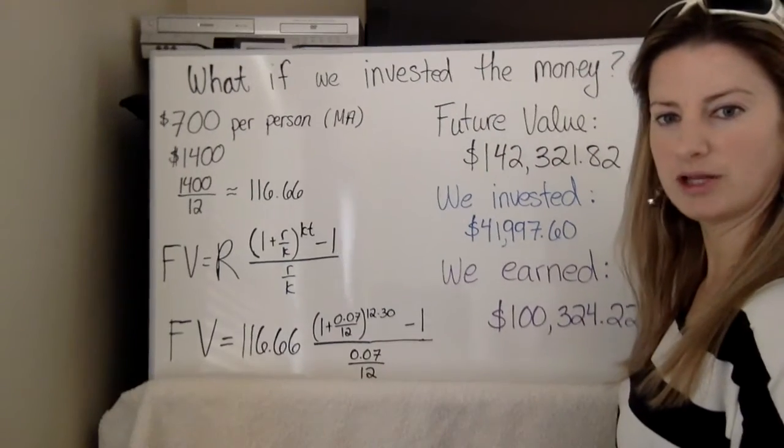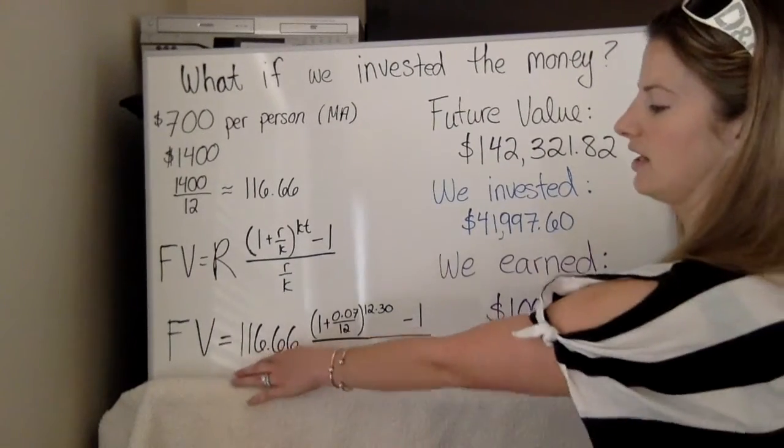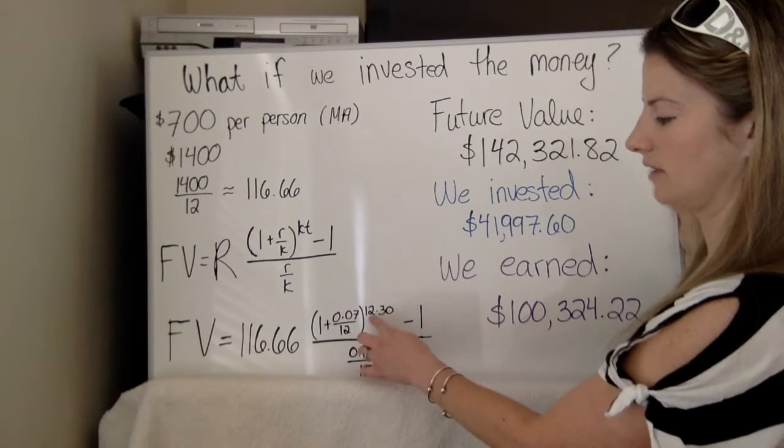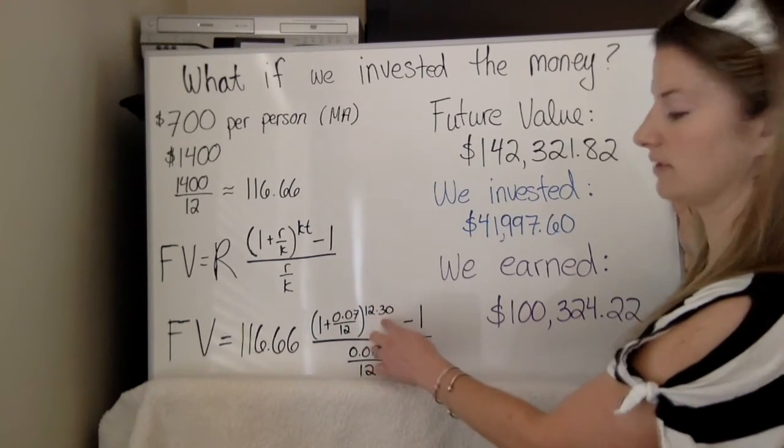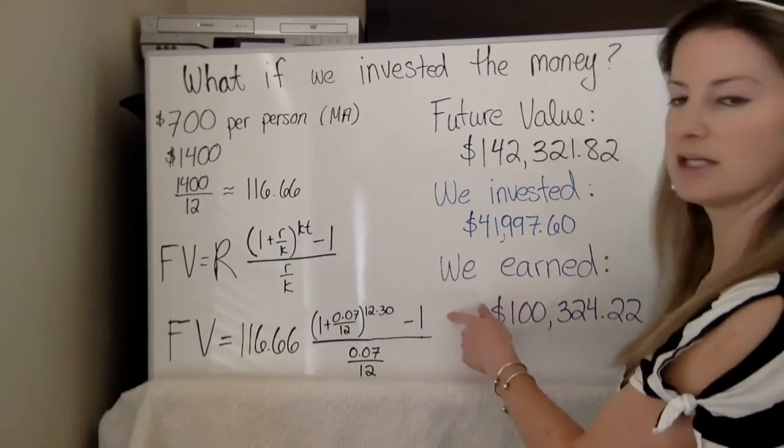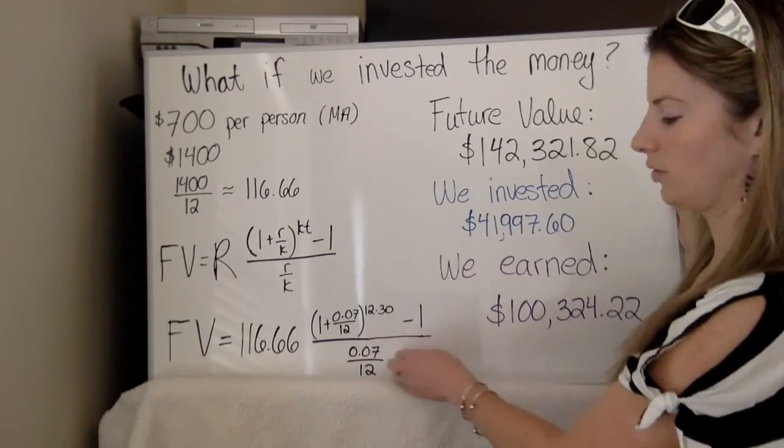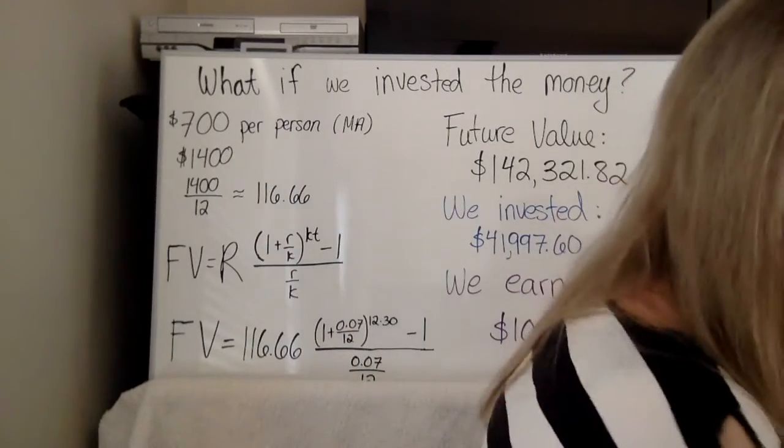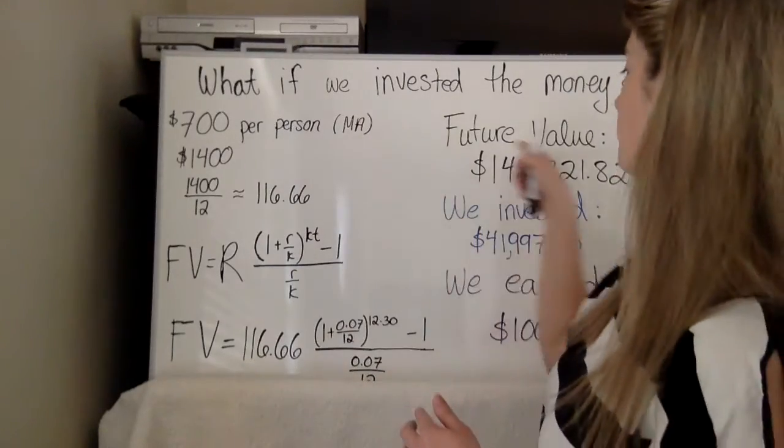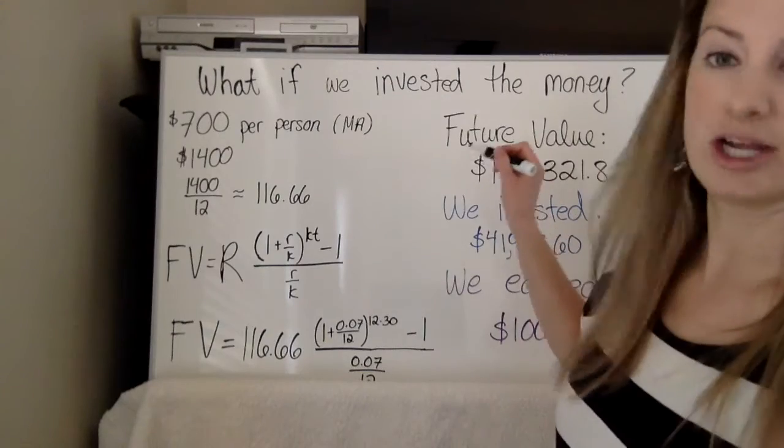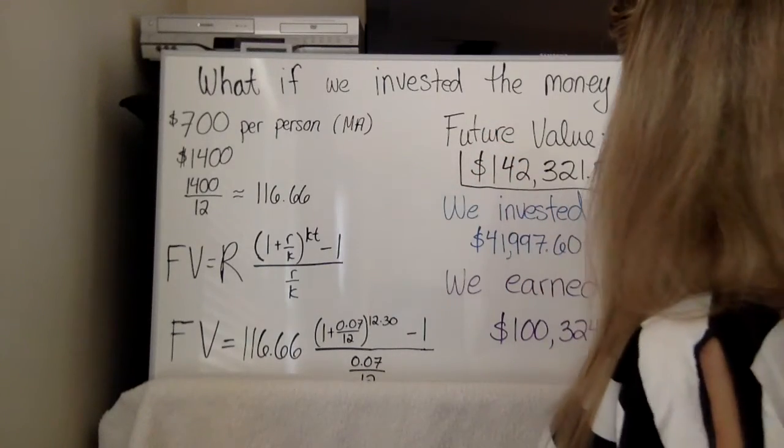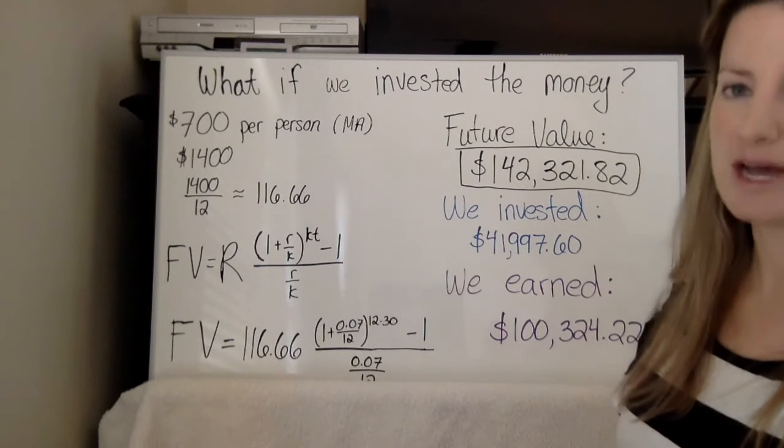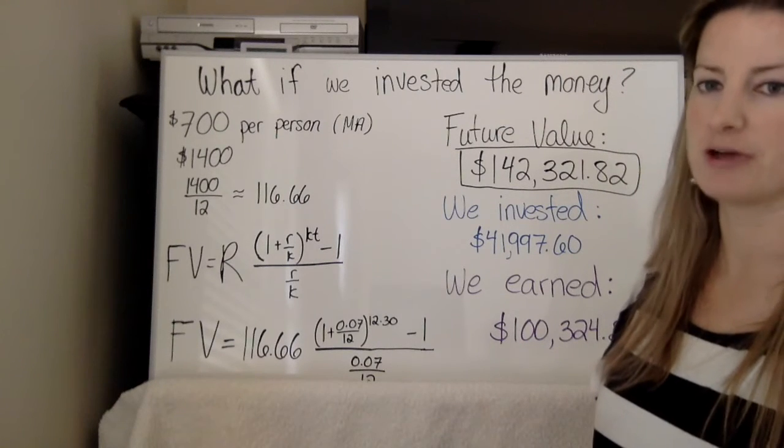So our little r is going to be 0.07. Our K is the number of times it's compounded per year, which is going to be 12. And then K again is number of times periods per year. So that's going to be 12. And then T is time. So 30 years. So what you end up with, and then minus one, of course, and then divided by R over K, which is the interest rate per compounding period. So let's substitute in our values. And I know I'm losing a little bit here. But as you can see, 116.66, one plus 0.07 over 12 times raised to the 12 times 30, which is 360 minus one, and then over 0.07 divided by 12. So what ends up happening? So this is very interesting.